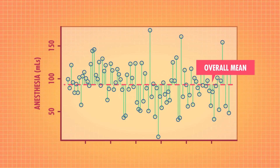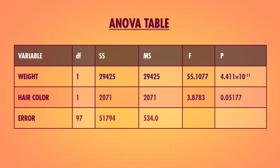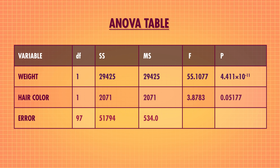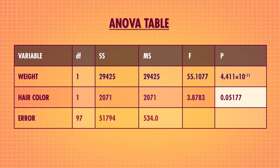The overall variation is measured by the sum of squared distances between the overall mean amount of anesthesia used and each dose administered — called the sums of squares total. We can calculate an ANOVA table that shows the sums of squares and F tests for each of our effects. Even though this is an ANCOVA model, we still usually refer to these as ANOVA tables. And even though this table has both continuous regression factors and categorical ANOVA factors, we read it just like a regular ANOVA table. We can see that weight is a significant predictor of how much anesthesia you'll need, but hair color isn't. The world, as they say, is our oyster.